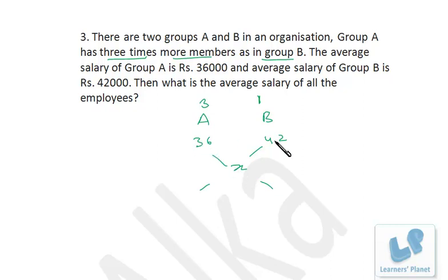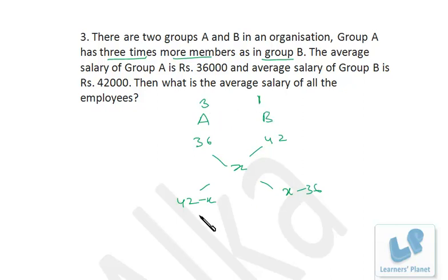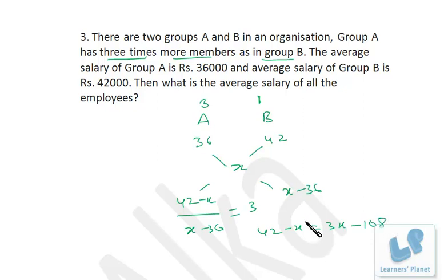This x must lie somewhere between 36 and 42. So I write (x minus 36) and (42 minus x) for each side. These are in the ratio 3 to 1. So equating: 42 minus x equals 3 times (x minus 36), giving 42 minus x equals 3x minus 108. So 4x equals 150, and x equals 150/4, which is 37.5 thousand.